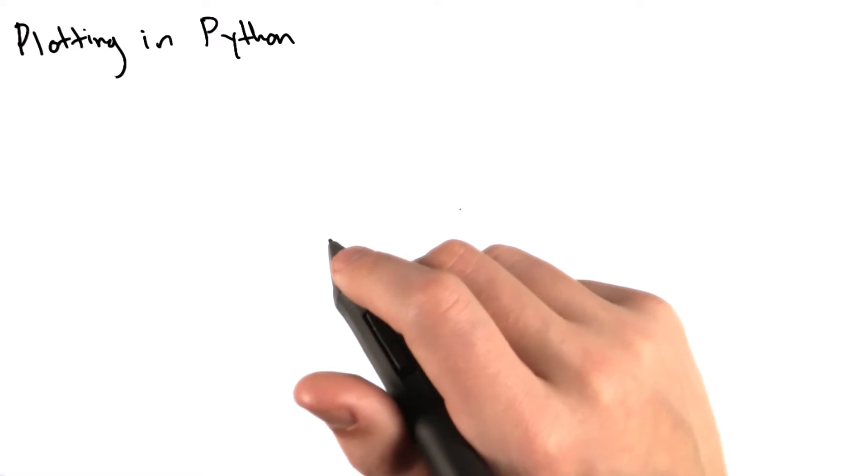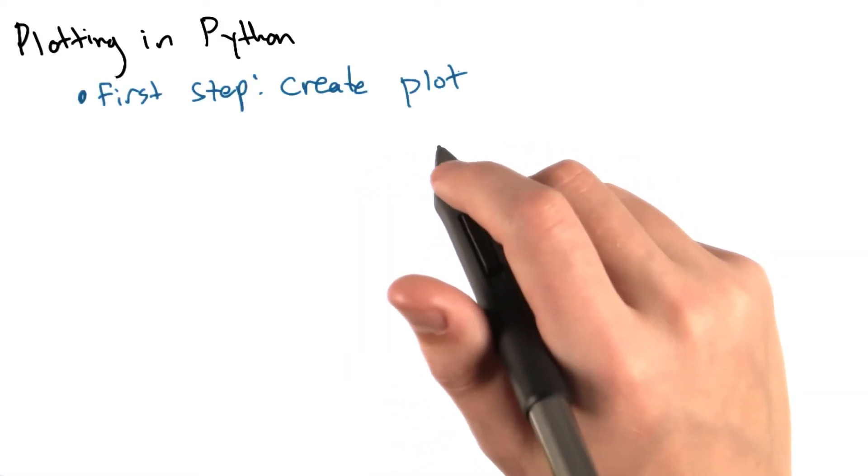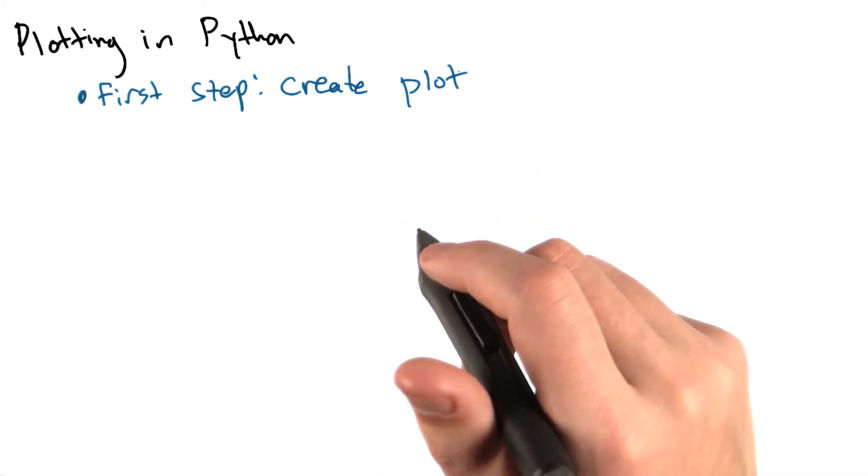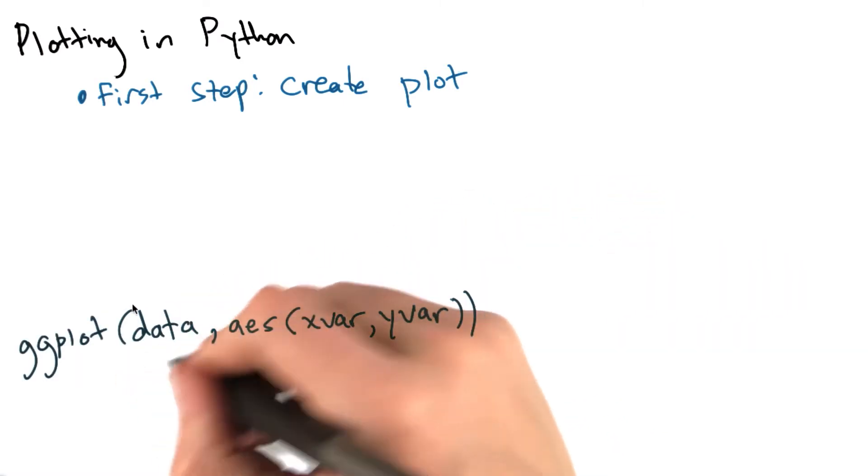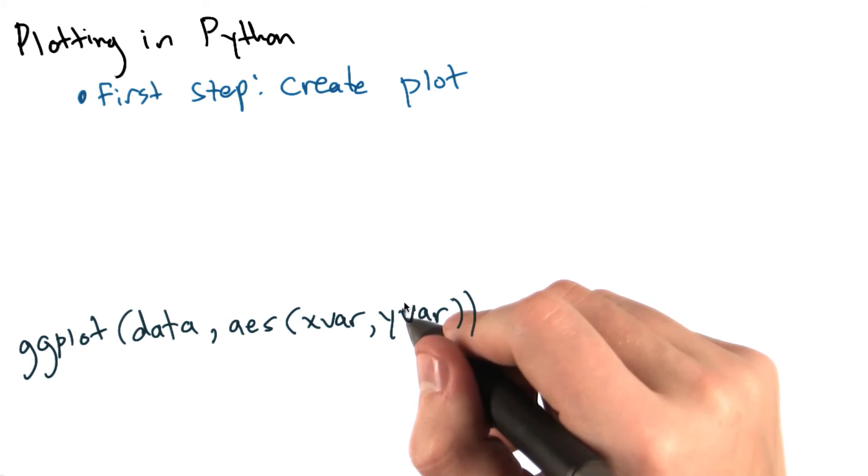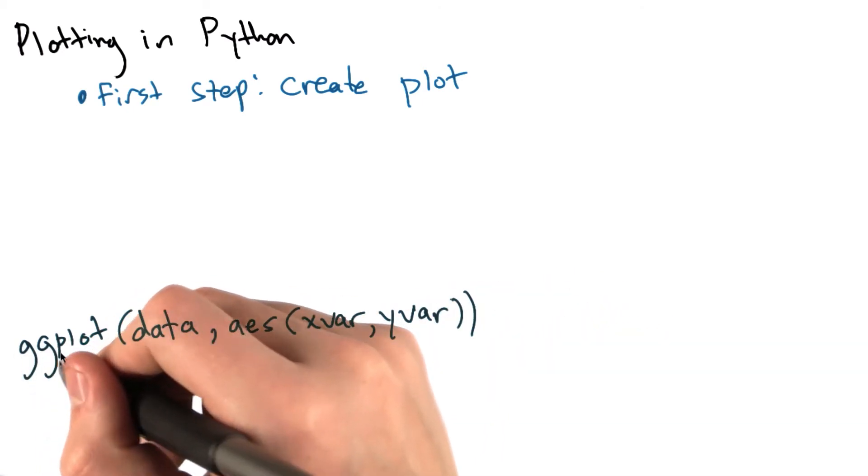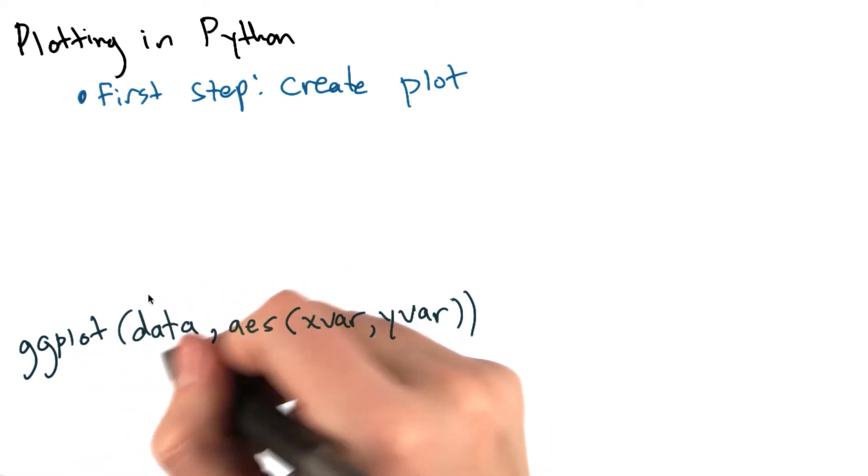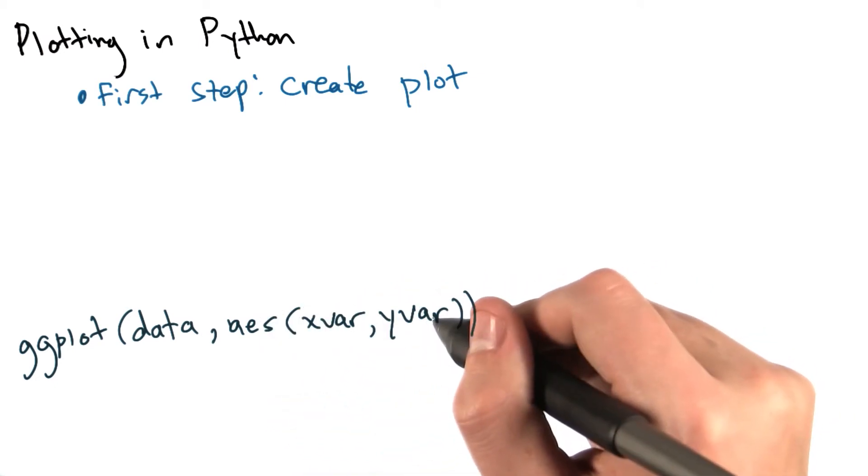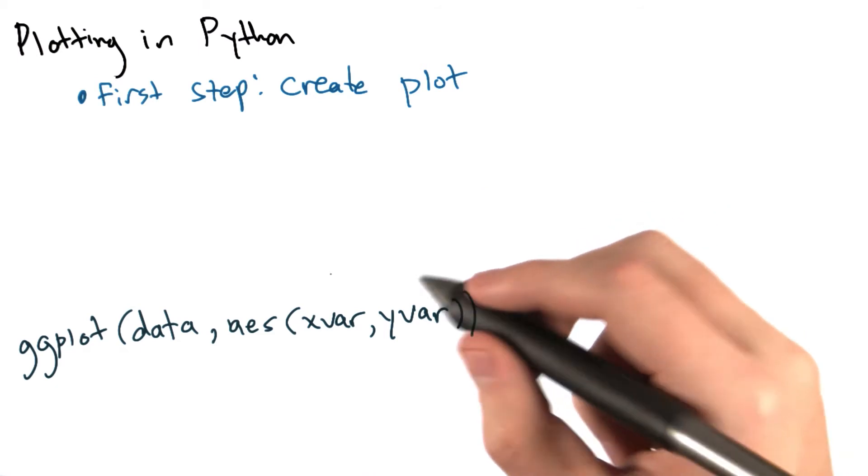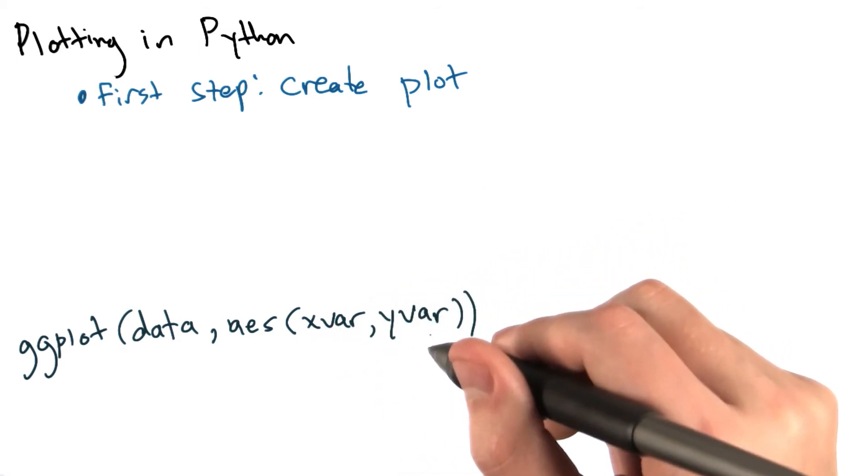The first step in creating a graphic is always to create our plot, which is essentially going to be our canvas. This can be done by calling ggplot(data, aes(xvar, yvar)). Data here is going to be a pandas data frame, and xvar and yvar are going to be columns in that data frame. So what we're doing here is saying, let's make a ggplot. The data source is going to be our data frame, and the quantities that we're interested in plotting are xvar and yvar. This might be district and number of AADHAR enrollments, or position and number of players, something like that.